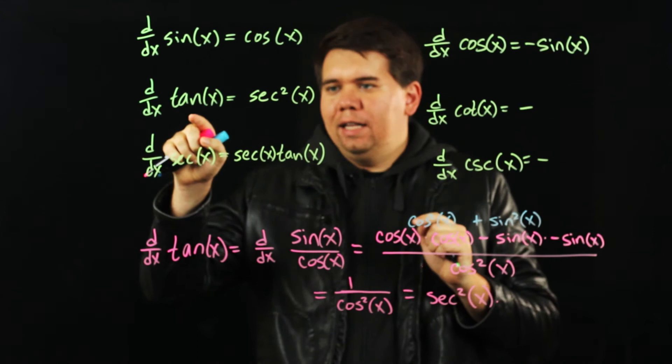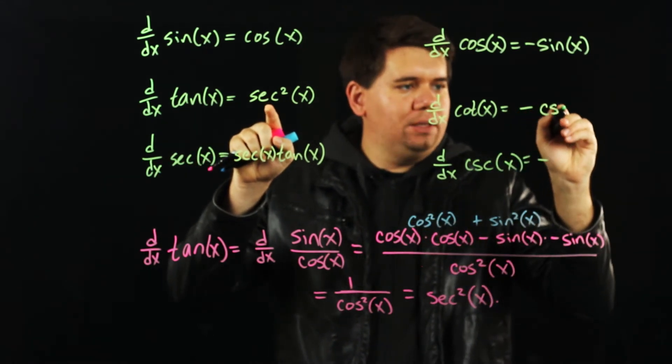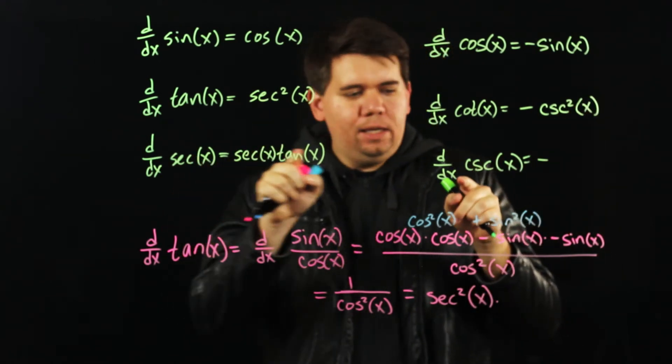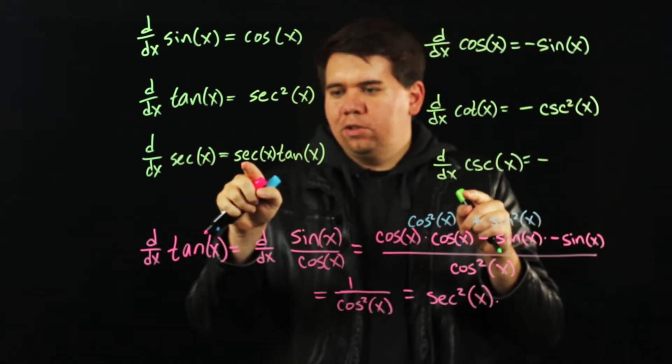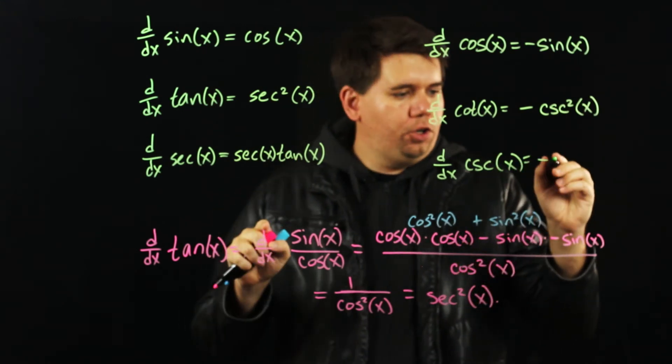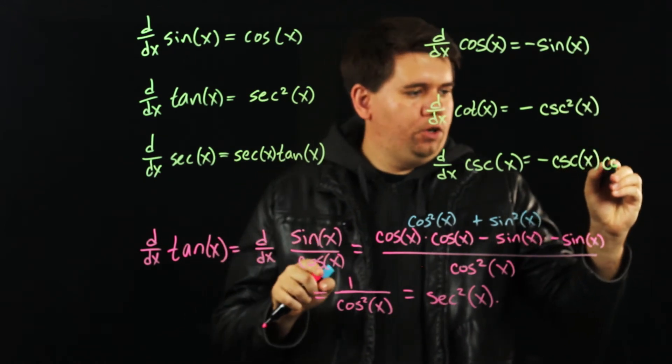So instead of doing tangent, we're doing cotangent. Instead of getting out secant squared, we get minus cosecant squared. Instead of doing secant, we have cosecant. So instead of getting out secant times tangent, we get out minus cosecant times cotangent.